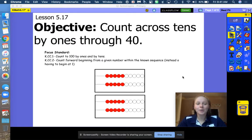Hi friends, today we're going to do Module 5, Lesson 17. Look, there's our T number right here. Objective: count across tens by ones through 40. So fluently practicing counting, and then by the end of kindergarten, we should be getting all the way up to 100 by ourselves.